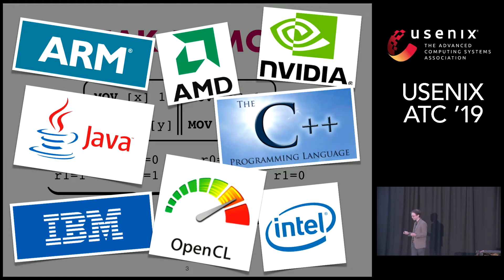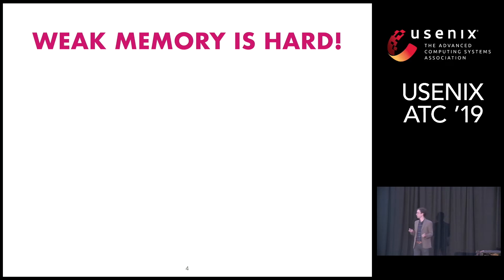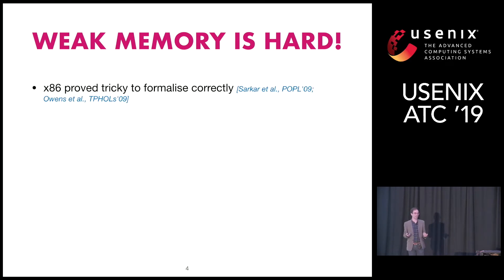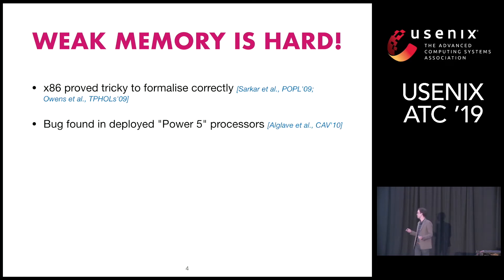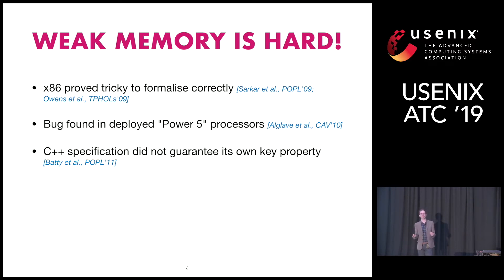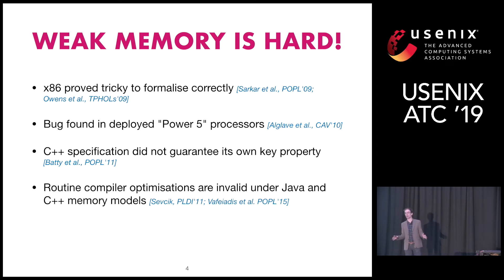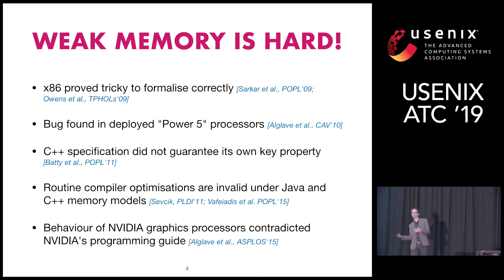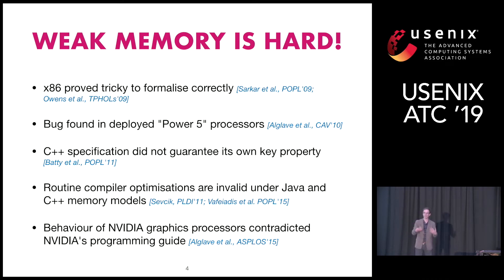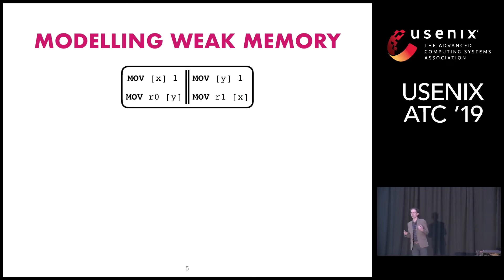Weak memory is a completely pervasive concept, and it brings complexity and confusion wherever it appears. The x86 weak memory model took a couple of goes to get right. There were bugs found in deployed Power processors. The C++ specification got confused about what it was guaranteeing. Compiler optimisations that seem straightforward are in fact invalid in the presence of weak memory. And NVIDIA graphics processors contradicted their own programming guide. So it's not just programmers who get confused — it's the manufacturers and language designers too. There is therefore a great need to be very precise and formal about what is allowed in the presence of weak memory, and a lot of work has been done in the last decade to pin this down.